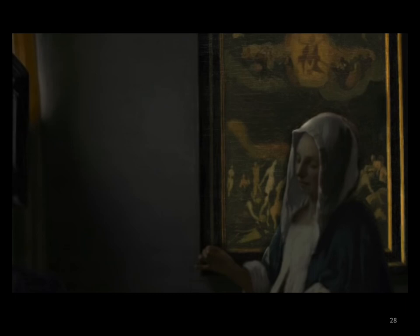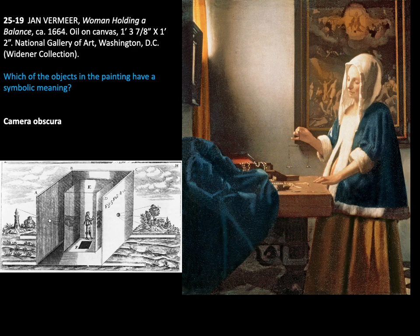Perhaps she is weighing her valuables. The painting in the background shows Christ functioning as judge, judging the souls of the blessed and damned — this is called the Last Judgment. Art historians debate whether Vermeer used mirrors and a camera obscura — a darkened box with a convex lens or aperture for projecting an image of an external object onto a screen inside — because the painting includes parts that appear out of focus, suggesting he used a lens.